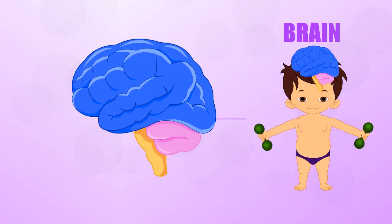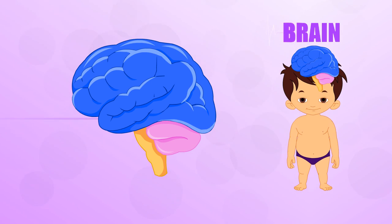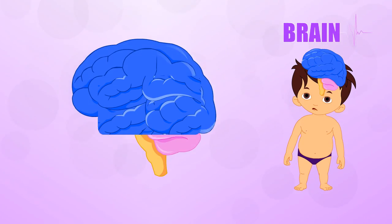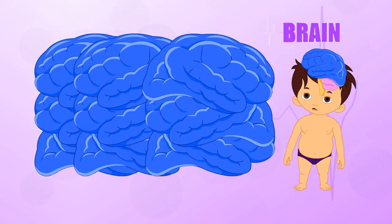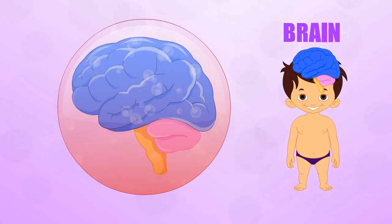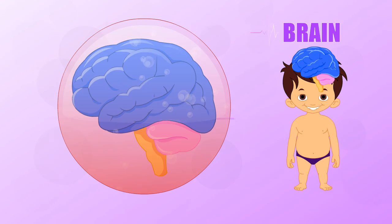Your brain triples in weight between birth and adulthood. As it grows, it wrinkles up to fit your skull which acts like a protective crash helmet. If you could stretch it out, your brain would cover an ironing board. Shock absorbing liquids fill the spaces between the brain and the skull.